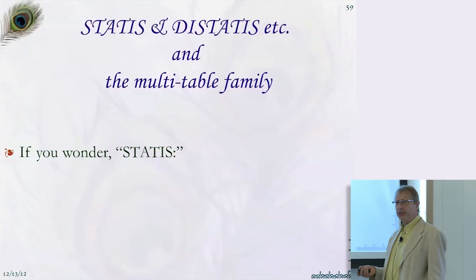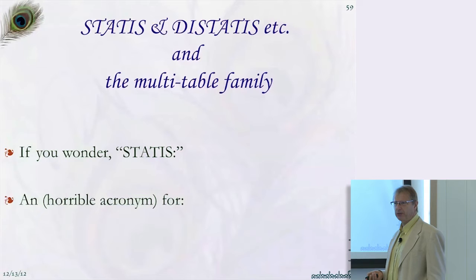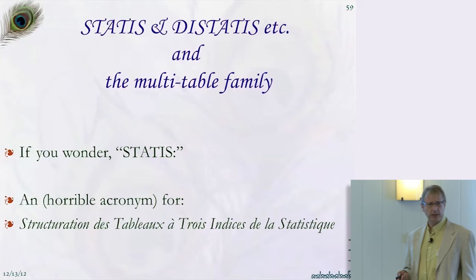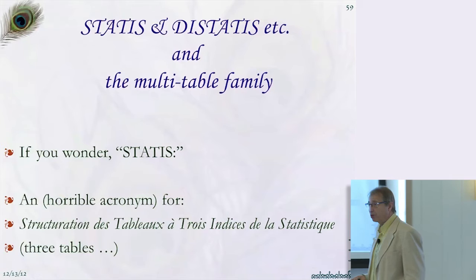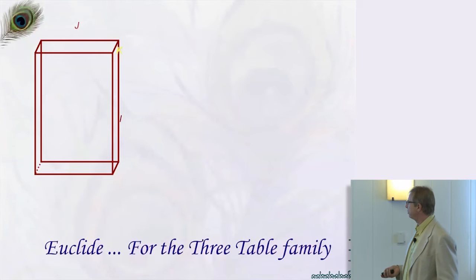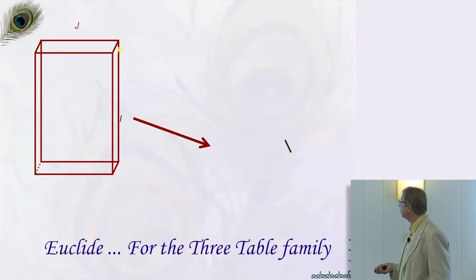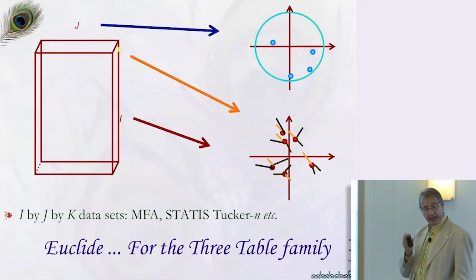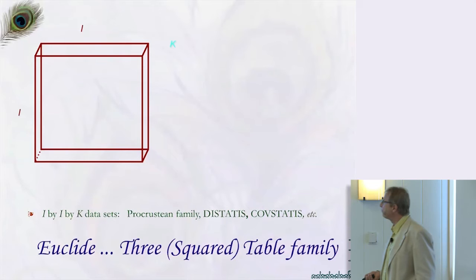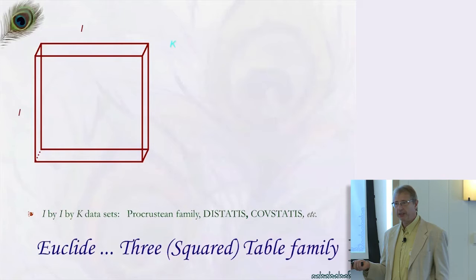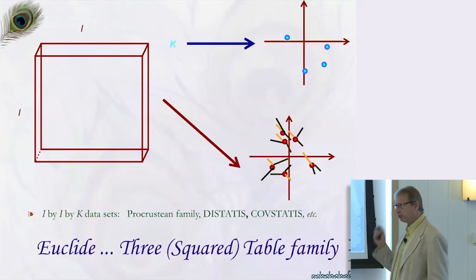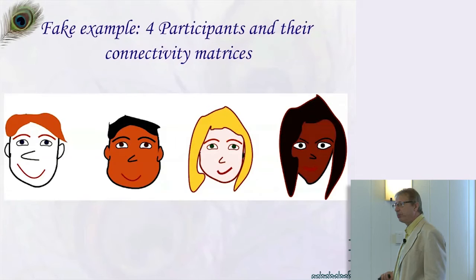For more than two matrices, we need to integrate them — this is the STATIS family. STATIS stands for a horrible French acronym. It's part of the Euclidean three-way toolbox, where you have a brick of data and want factor scores for the whole family of tables as well as for each individual table, plus the equivalent of loadings. For distance or correlation matrices, this is called DiSTATIS or CovSTATIS. Full details are available on my homepage.